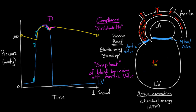This notch is called the dicrotic notch. Drawing it again with the dicrotic notch shows how it differs from the simpler version: instead of pressure simply going straight down, there's actually a notch that comes in there. This increase — this difference — is because of the compliance of the aorta.